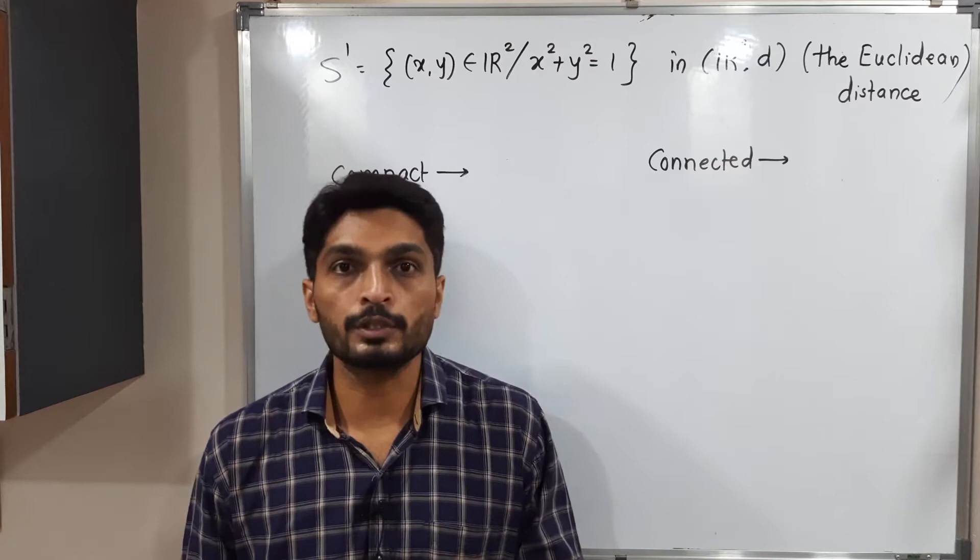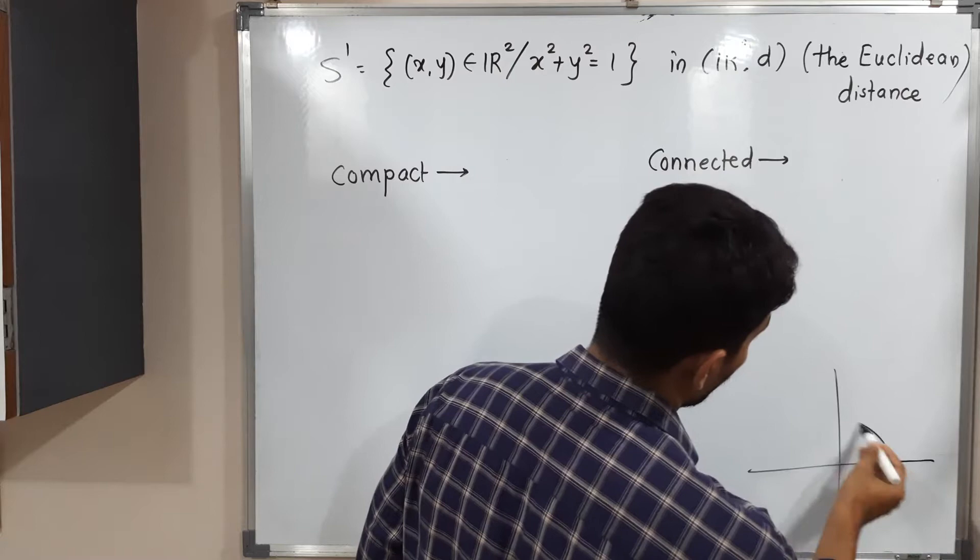You know that this is equation of circle with center origin and radius 1. Let us draw that circle. So that circle will be like this, having radius 1.